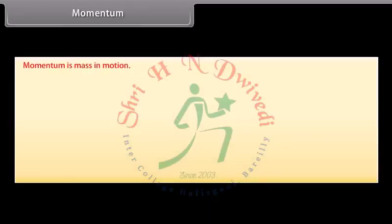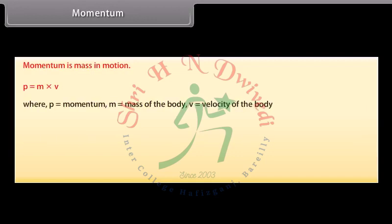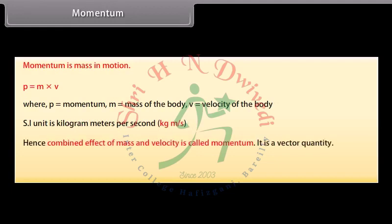Momentum is mass in motion. P is equal to M into V, where P is equal to momentum, M is equal to mass of the body, V is equal to velocity of the body. SI unit is kilogram meters per second. Hence, combined effect of mass and velocity is called momentum. It is a vector quantity.